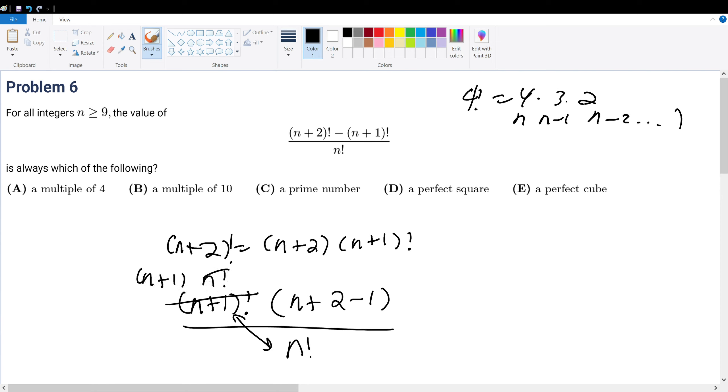Times n factorial, so n factorial and n factorial cancels, becomes n plus 1 times n plus 1. So notice this is a perfect square, so a perfect square is answer choice D.